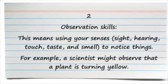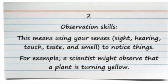Two, observation skills. This means using your senses—sight, hearing, touch, taste, and smell—to notice things. For example, a scientist might observe that a plant is turning yellow.